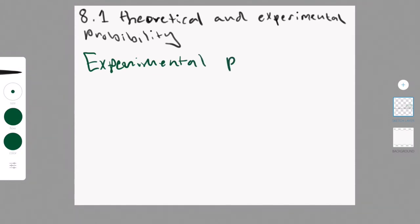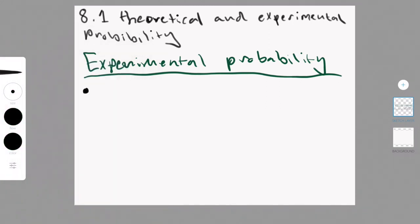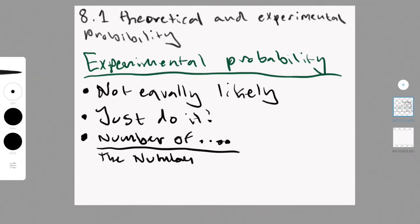The experimental approach. So experimental probability, or known as empirical probability, is essentially when you actually do the event. You test in real life the actual trials. Now this method can be useful when the outcomes are not equally likely and so estimation is required.